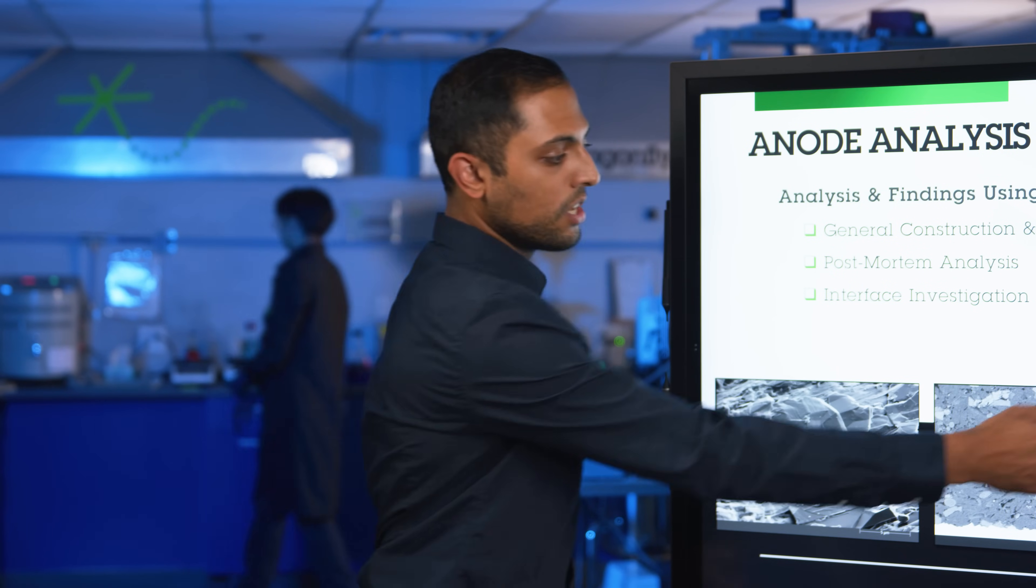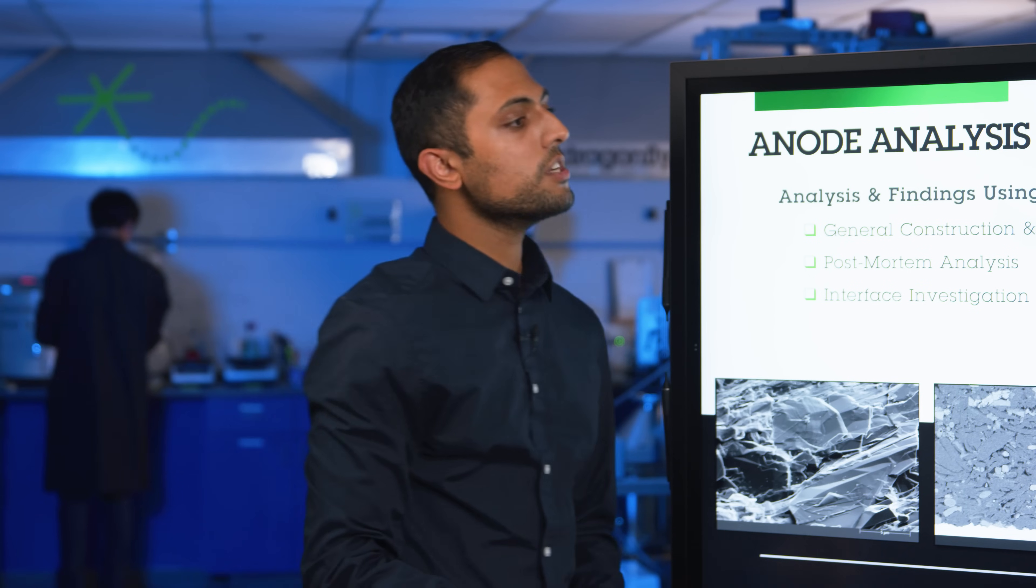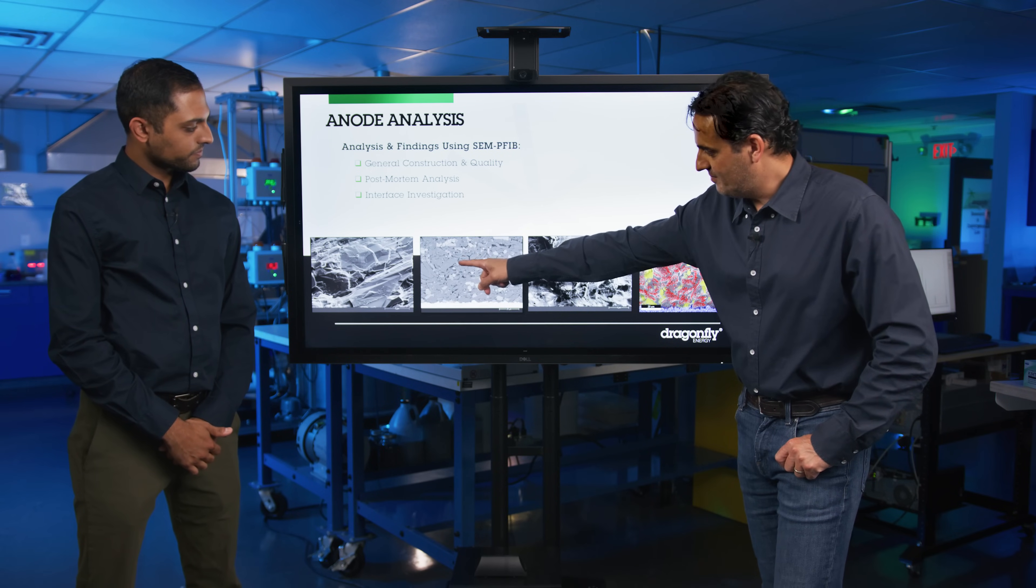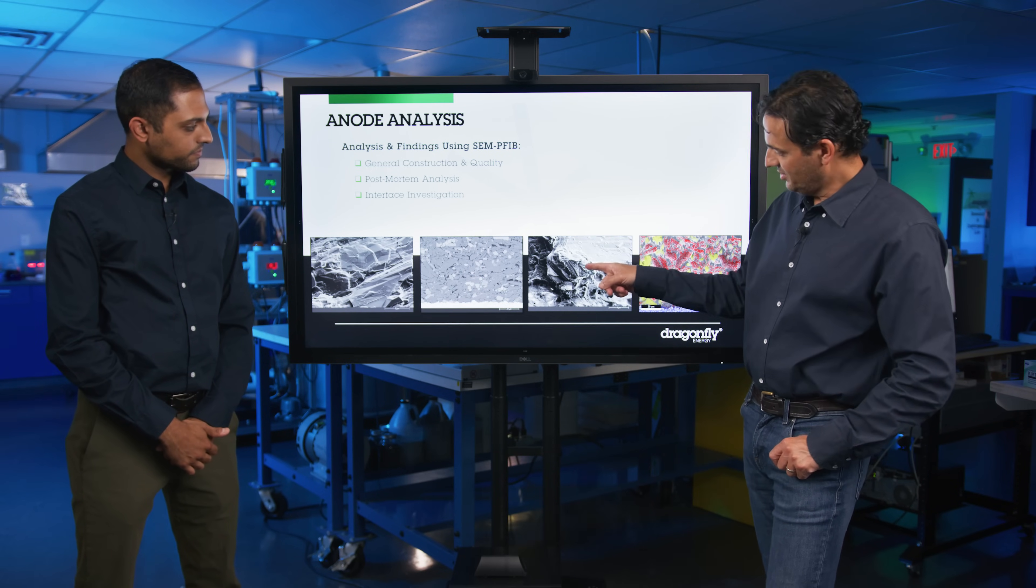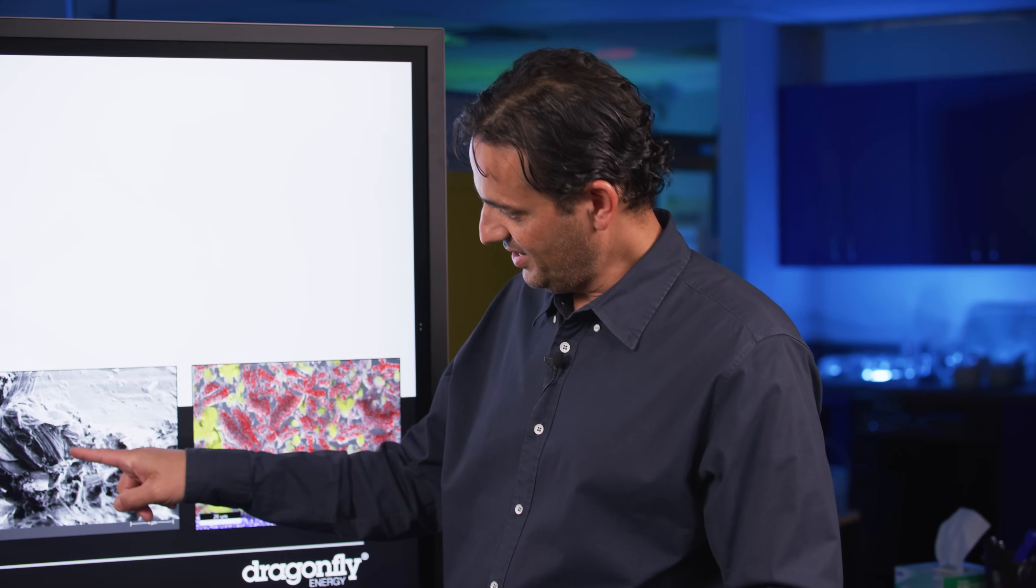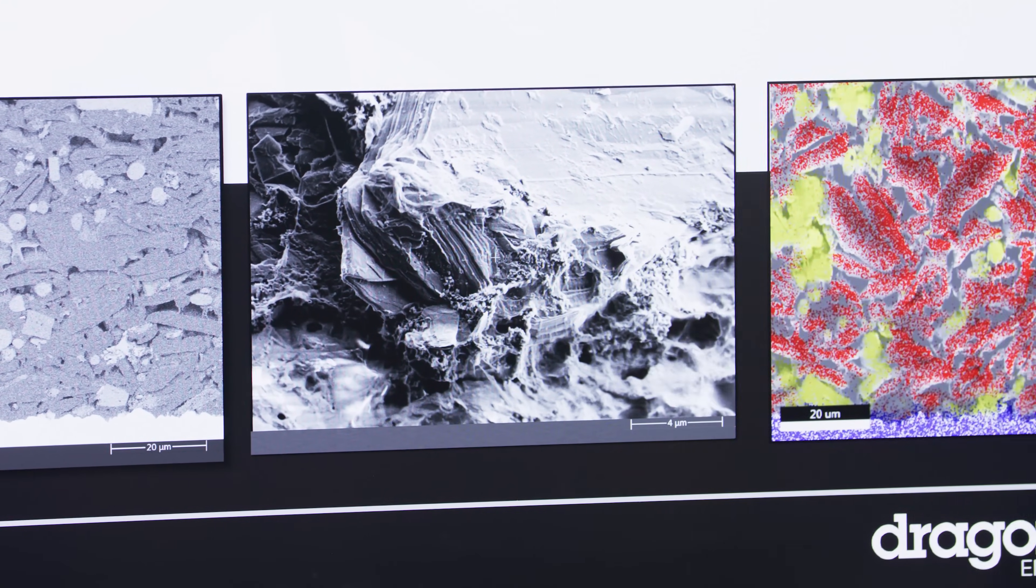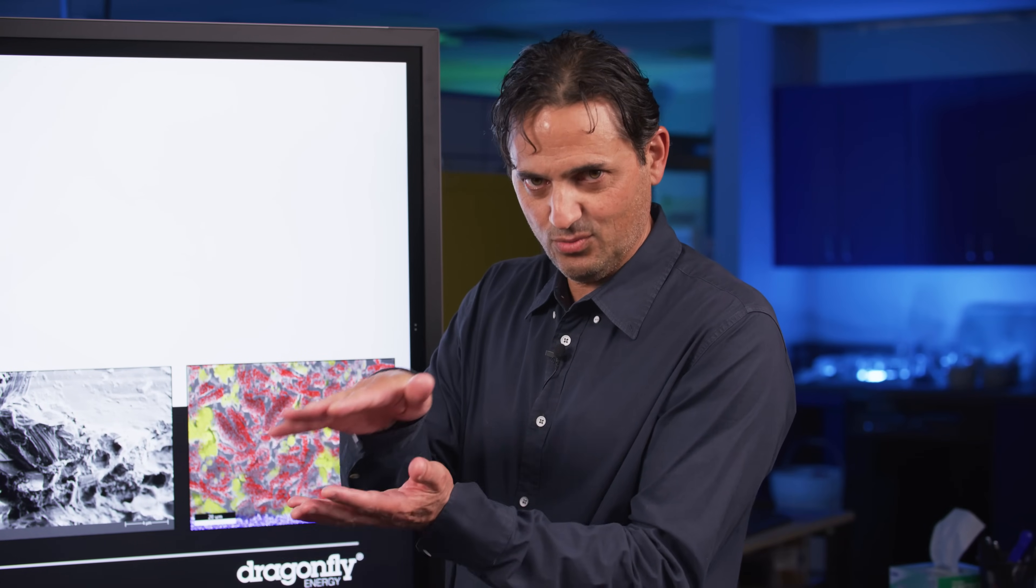And look for signs of degradation and an imperfect SEI such as co-intercalation and exfoliation. So this anode has a series of graphite particles, and if you look at a close-up of the graphite particle, you'll see that it is comprised of these very thin graphitic planes that are kind of stacked.